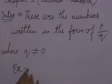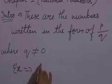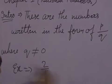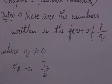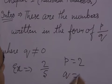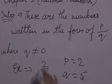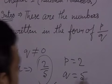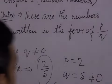Suppose I give you an example: the number 2 upon 5. If we want to check whether 2 upon 5 is a rational number, we look at P upon Q — here P equals 2 and Q equals 5. We can say that 2 upon 5 is a rational number because Q here is not equal to 0.